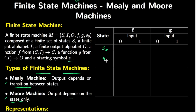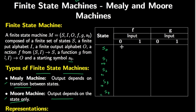We need a starting state s0. Then we have four states that tell us what the previous two symbols were: s1 corresponds to 0,0; s2 corresponds to 0,1; s3 corresponds to 1,0; and s4 corresponds to 1,1.